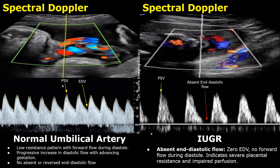First, we will look at the normal umbilical artery spectral Doppler parameters. The normal umbilical artery has a low resistance waveform with forward flow throughout the cardiac cycle. This line is the baseline — it is the zero point. If the waveform is seen above this baseline, it means it is a forward flow. This sharp peak is the peak systolic velocity, or PSV; here the PSV is just over 30 centimeters per second. The lowest point in the wave is the end-diastolic velocity, or EDV — here it is around 15 centimeters per second. This waveform has a sawtooth pattern.